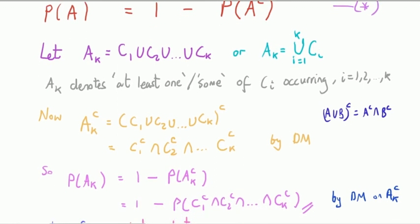For that we need to know the following: if we take the complement of not A_k, we get this by De Morgan's Law. Just to remind you how De Morgan's Law works, if I take the union of two events A union B, the complement of the union is the intersection of the complements. That's all I've done, just for k events.